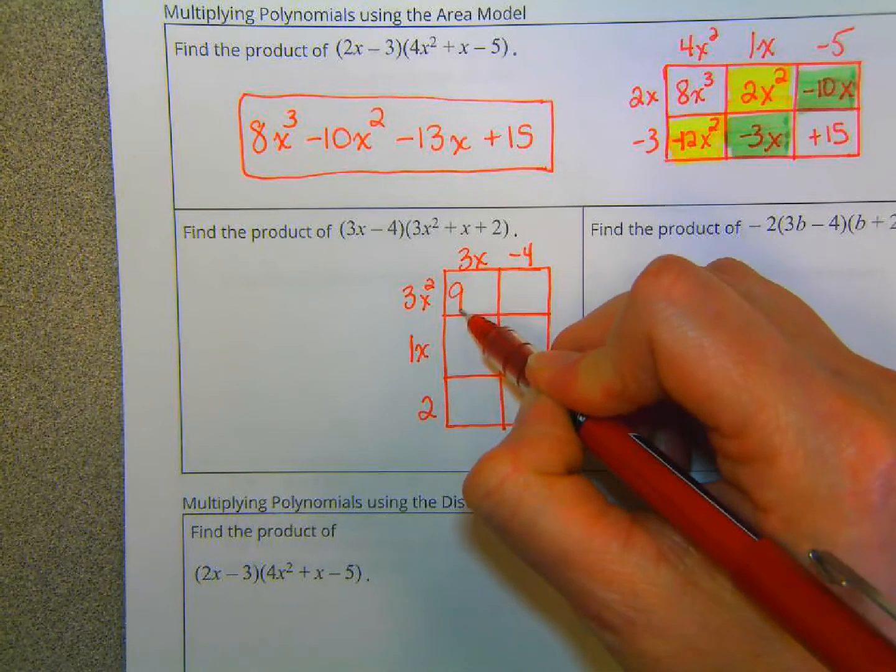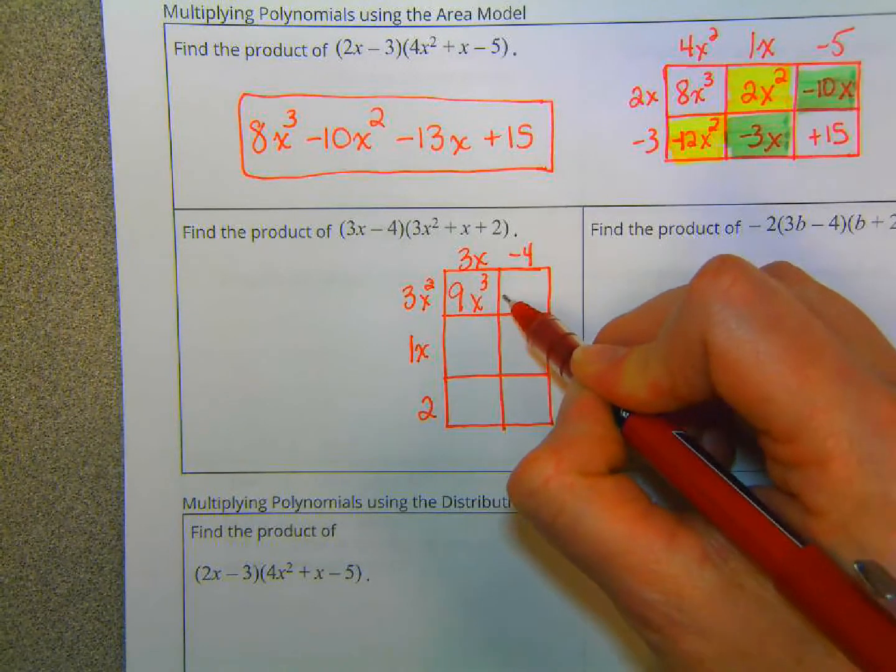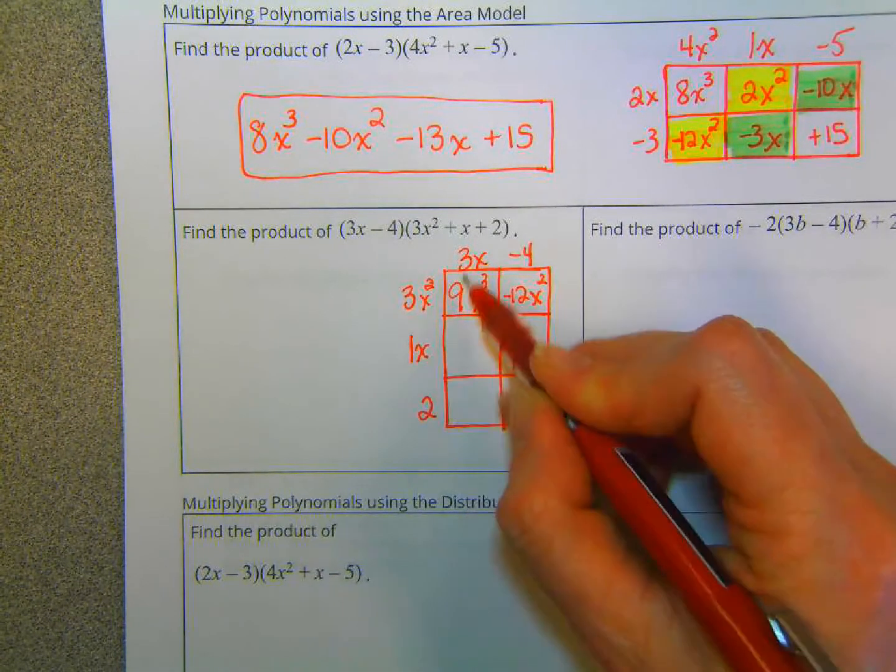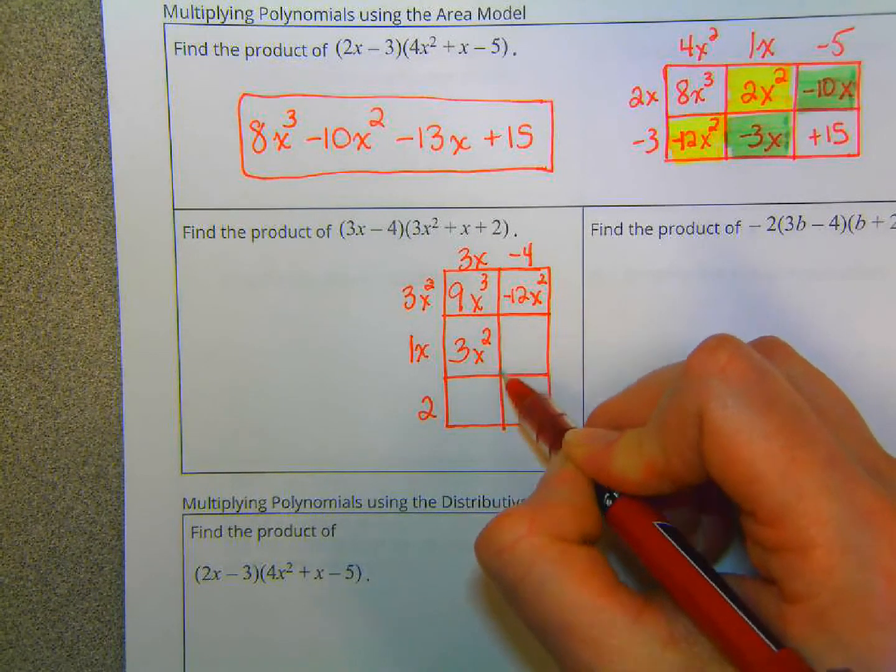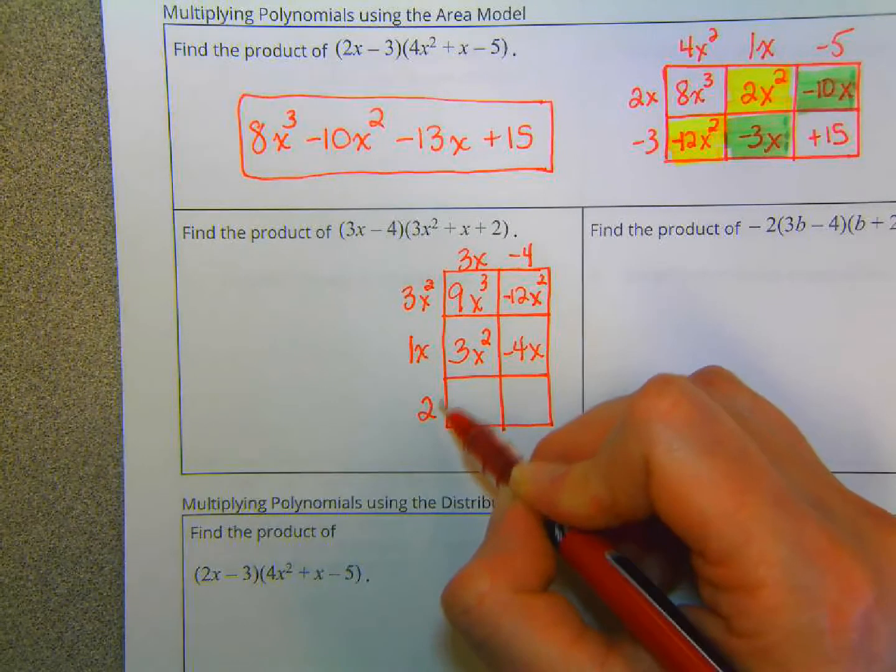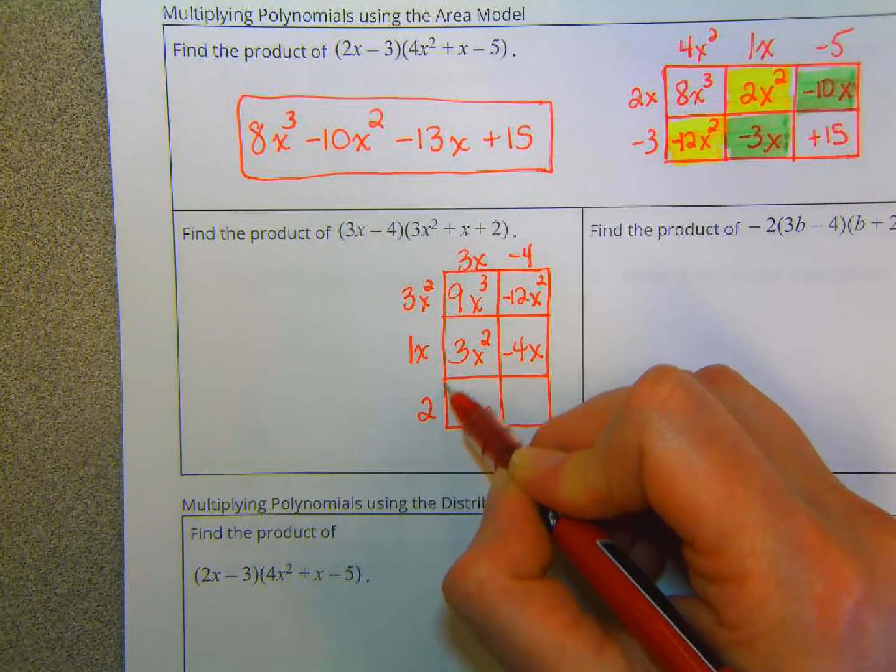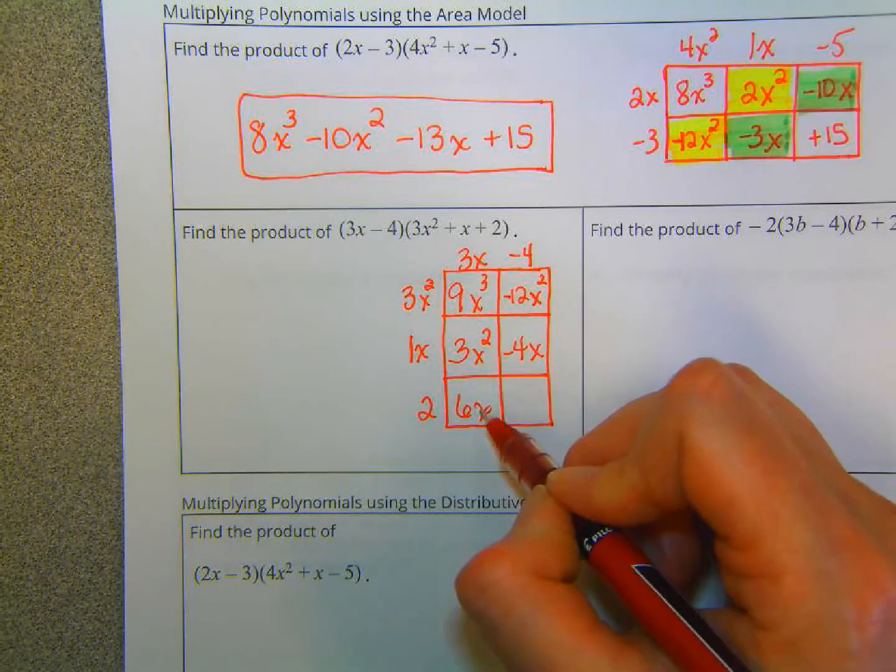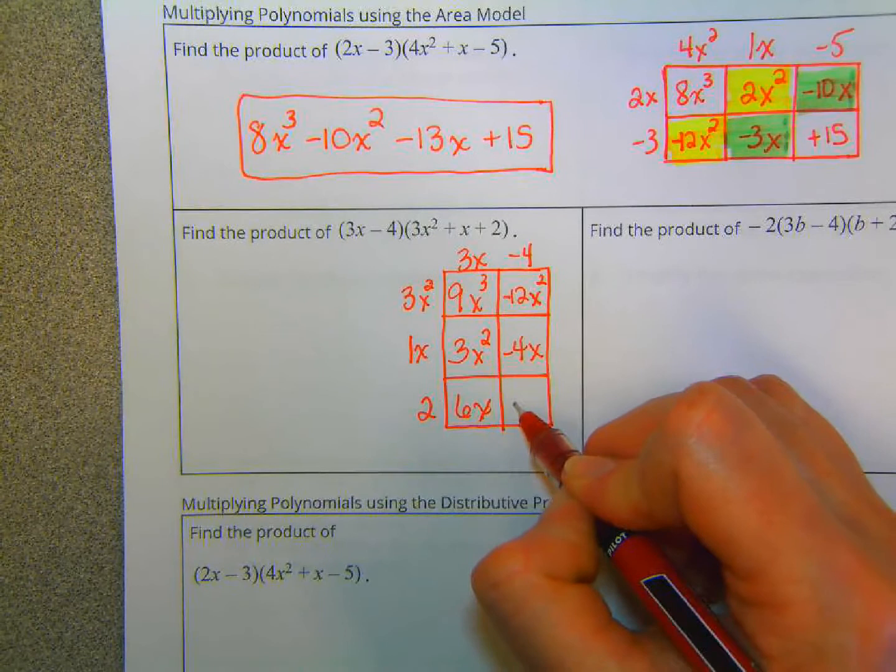3 times 3 is 9. x squared times x is x cubed. 3 times negative 4 is negative 12. x squared. 1x times 3x. 1 times 3 is 3. x times x is x squared. 1x times negative 4. That's negative 4x. 2 times 3x. That's 6x. Again, this length is 2. This length is the same as that length, which is the same as that length. That's 3x. So 2 times 3x is 6x. And 2 times negative 4 is negative 8.